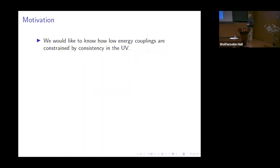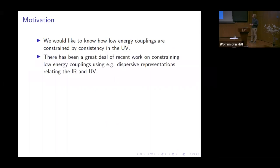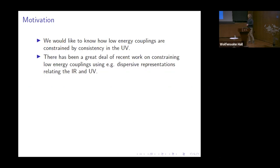The question a lot of people have been asking — for a long time but in particular new ways — is how can we relate low energy couplings to the UV completion scales, the Planck scale, and other things. This is done by dispersive representations. Pedro gave a nice talk on this; there's been a flurry of progress using dispersive representations to constrain IR couplings from consistency in the UV. You put in Regge-boundedness, impose unitarity, start with some ansatz, and then constrain the parameters.